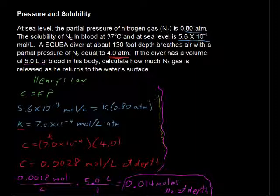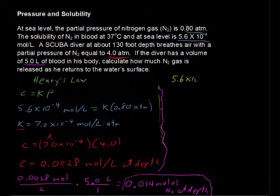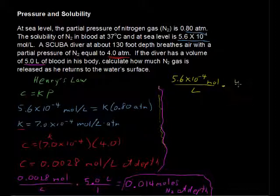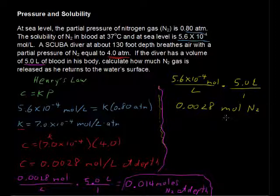This is why divers ascend very slowly, so that the nitrogen gas can come out of their bloodstream, can come out of their system gradually. By the time this diver reaches the surface, we have a concentration of 5.6 times 10 to the negative 4th moles per liter, and we still have the 5 liters of blood. So multiplied by 5, and we get at the surface 0.0028 moles of N2 dissolved at the surface.